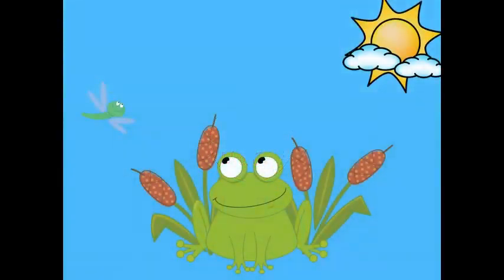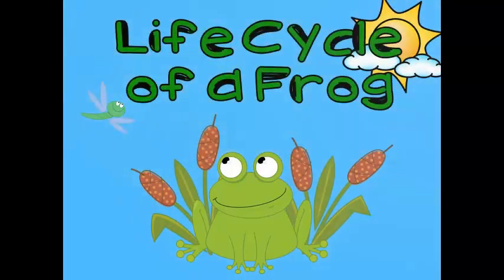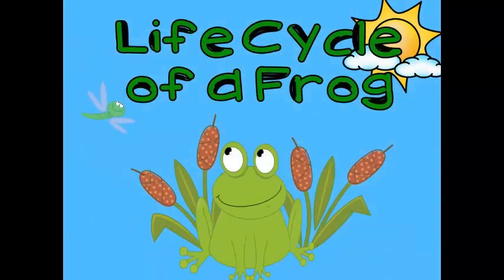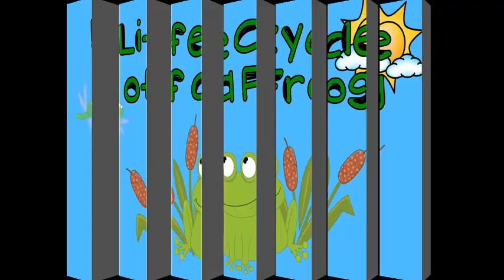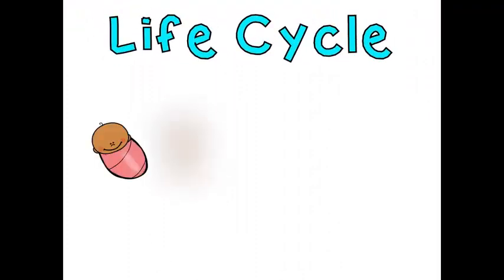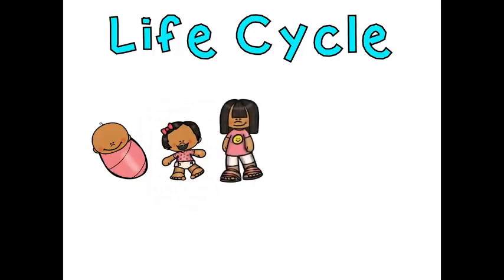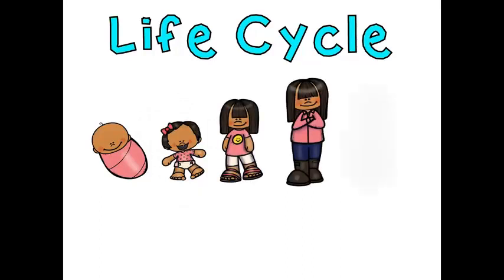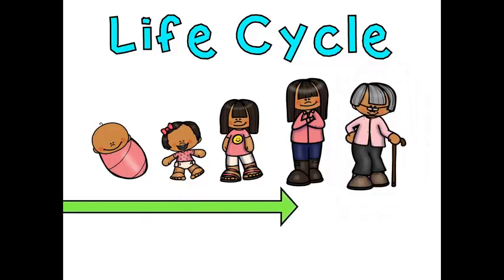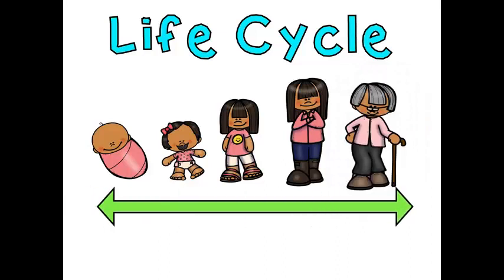Hi, everyone. Today we are going to learn about the life cycle of a frog. A life cycle is the changes a living thing goes through during its life. For example, we start off as babies, then we grow into children, and finally into an adult. This is the life cycle we go through because they are the changes we go through during our lifetime.